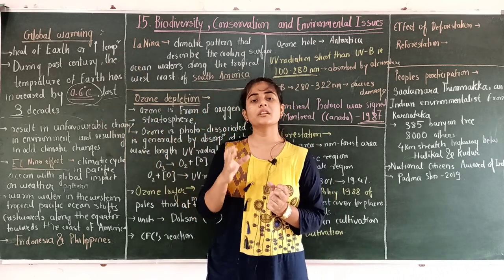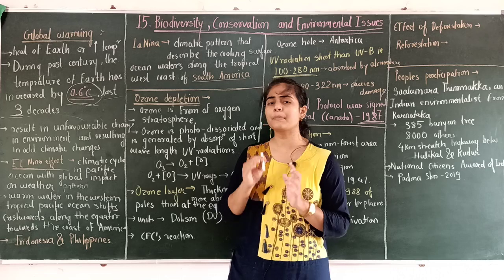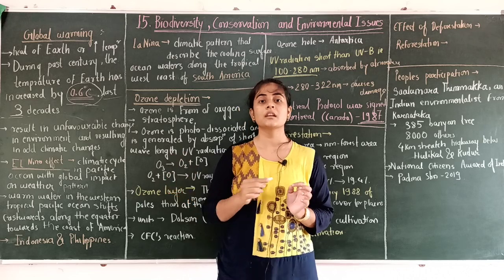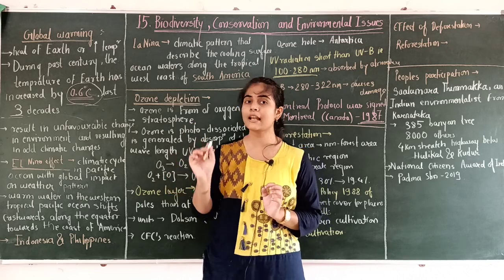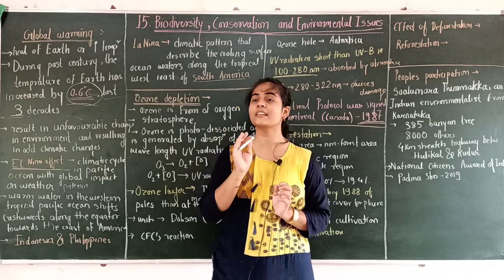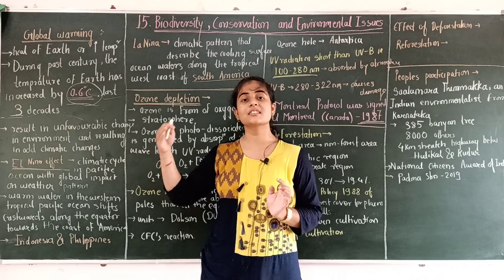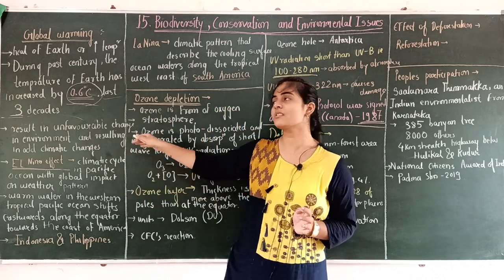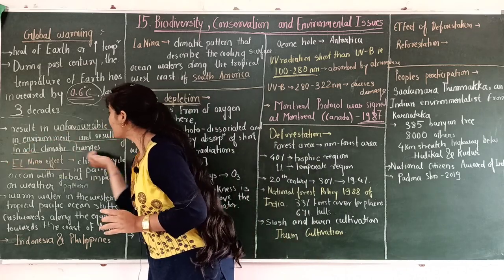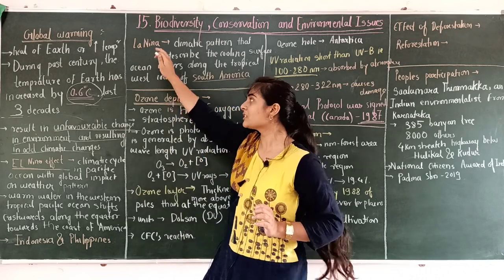As a result of global warming, it causes unfavorable climatic changes. Because heat is a major reason for climate, the heating of earth causes changes in the climate of the earth. So the first result caused by global warming is the unfavorable change in environment, resulting in odd climatic changes. These odd climatic changes we experience are just because of global warming.